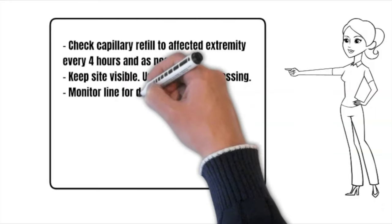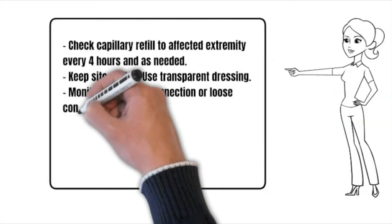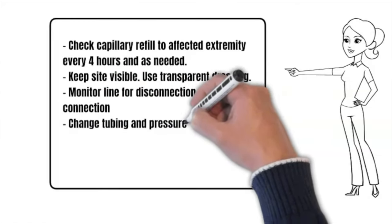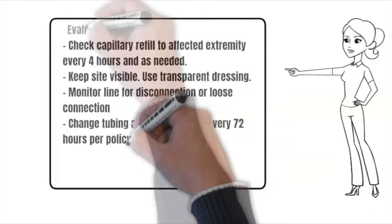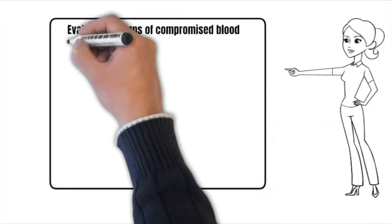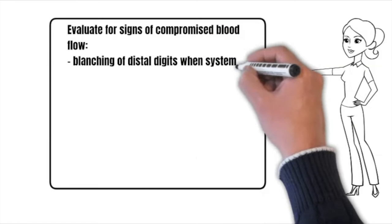Monitor line for disconnection or loose connection. Change tubing and pressure bag every 72 hours per policy. Evaluate for signs of compromised blood flow: blanching of distal digits when system is flushed.